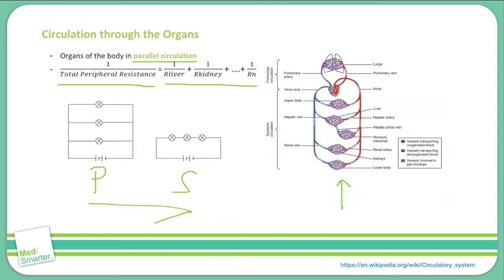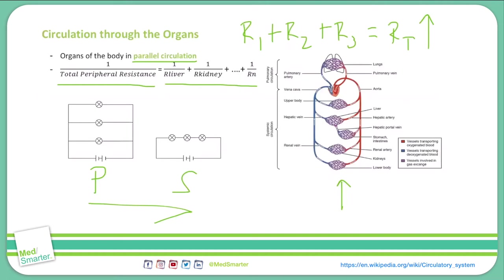What if the opposite were true — what if the major organs were arranged in a series circulation? The total resistance of vessels in series is calculated by adding up the individual resistances, so the total is necessarily larger than each individual resistance. If the organs were arranged in series, according to our pressure gradient equation — delta P equals Q or flow times resistance — we'd have a much higher resistance, and to maintain the same flow we'd need a much higher pressure gradient, meaning the heart would have to work much harder.